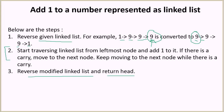Remember, addition starts from the least significant bit, which is the last 9 in this case. So we reverse the linked list to start with the least significant bit right away. Once we're done, we'll again reverse the modified linked list and return its head. There could be two scenarios: if the number is less than 9, we just add 1 and stop; if the number is 9, it becomes 10 and a carry moves to the next node.